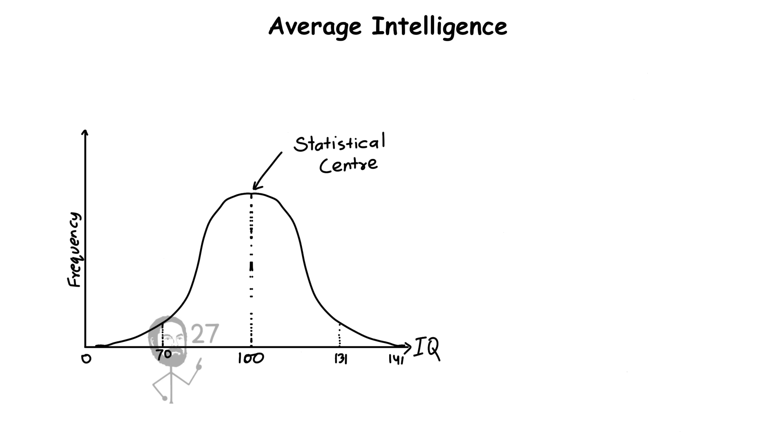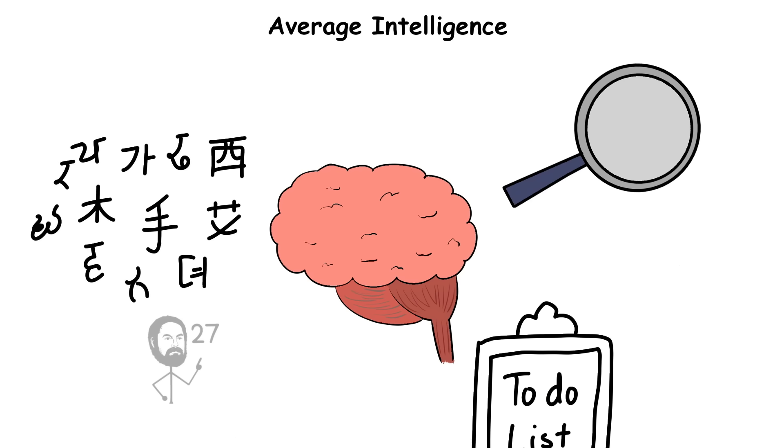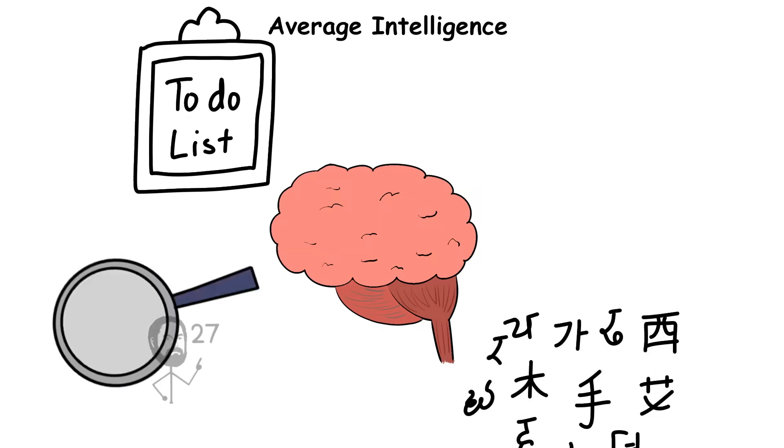An IQ in the average range indicates balanced cognitive functioning, the ability to process language, analyze problems, remember details, and adapt to changing circumstances without significant difficulty.